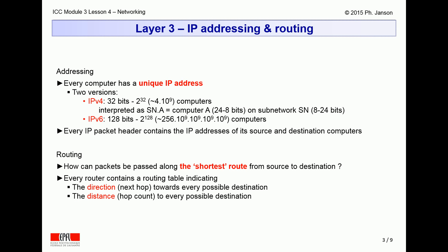As mentioned in the previous clip, Internet addressing is an issue covered at the IP network layer 3. Every single computer attached to the Internet needs to have one Internet address, which is like its telephone number. In the original IP protocol version 4, addresses were 32-bit long, which allowed addressing 2 to the power of 32 distinct computers, which makes about 4 billion computers.